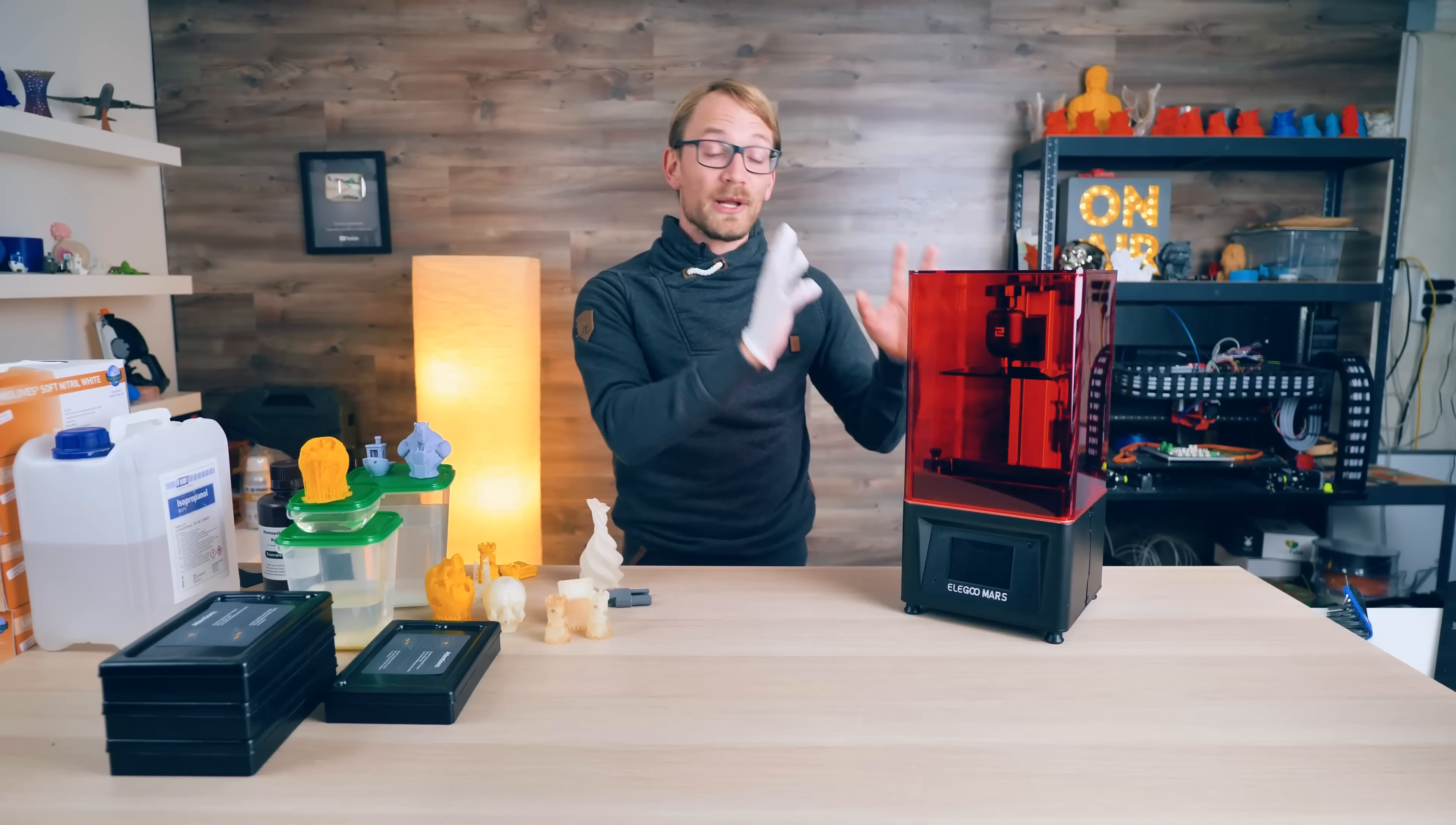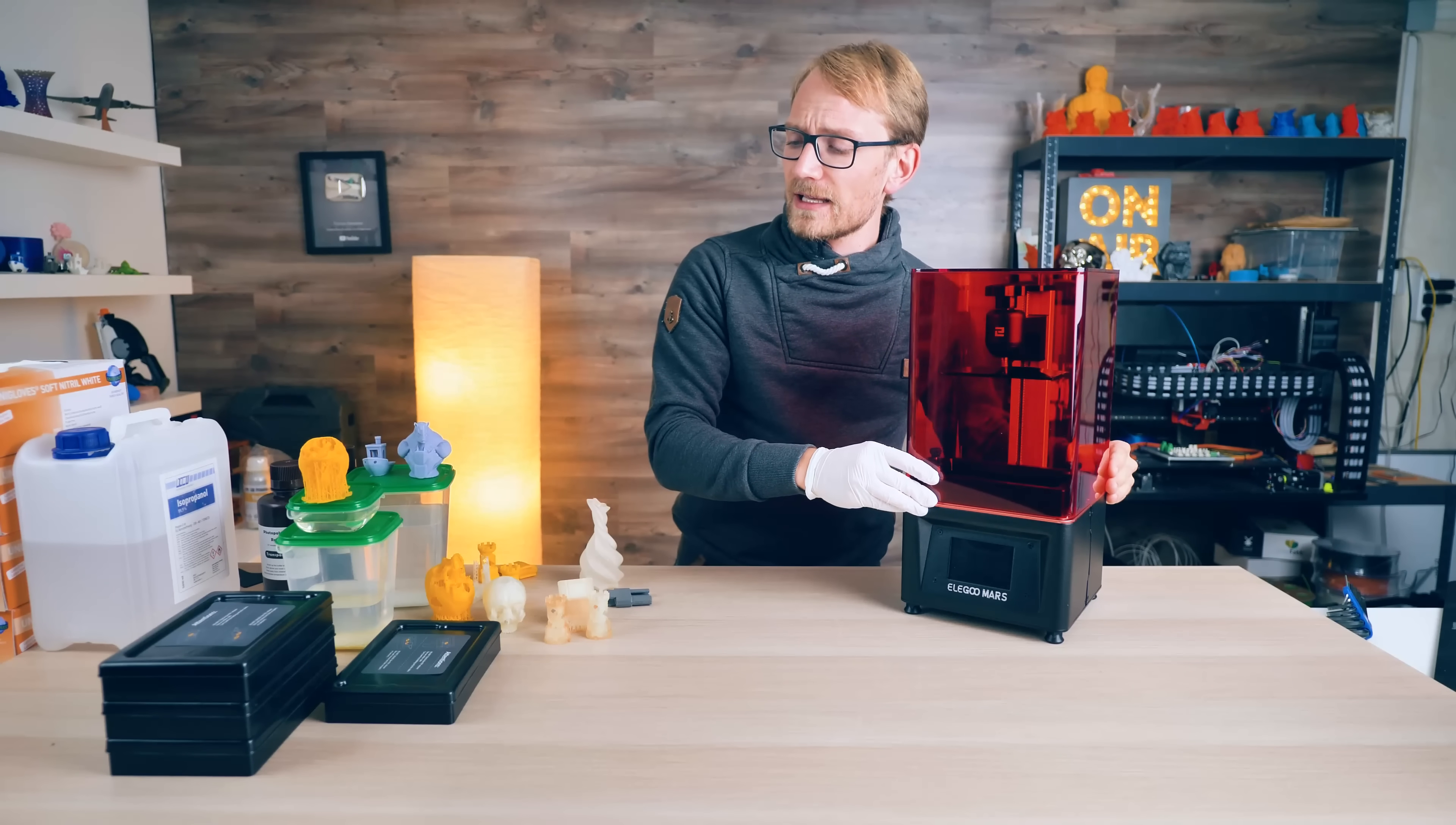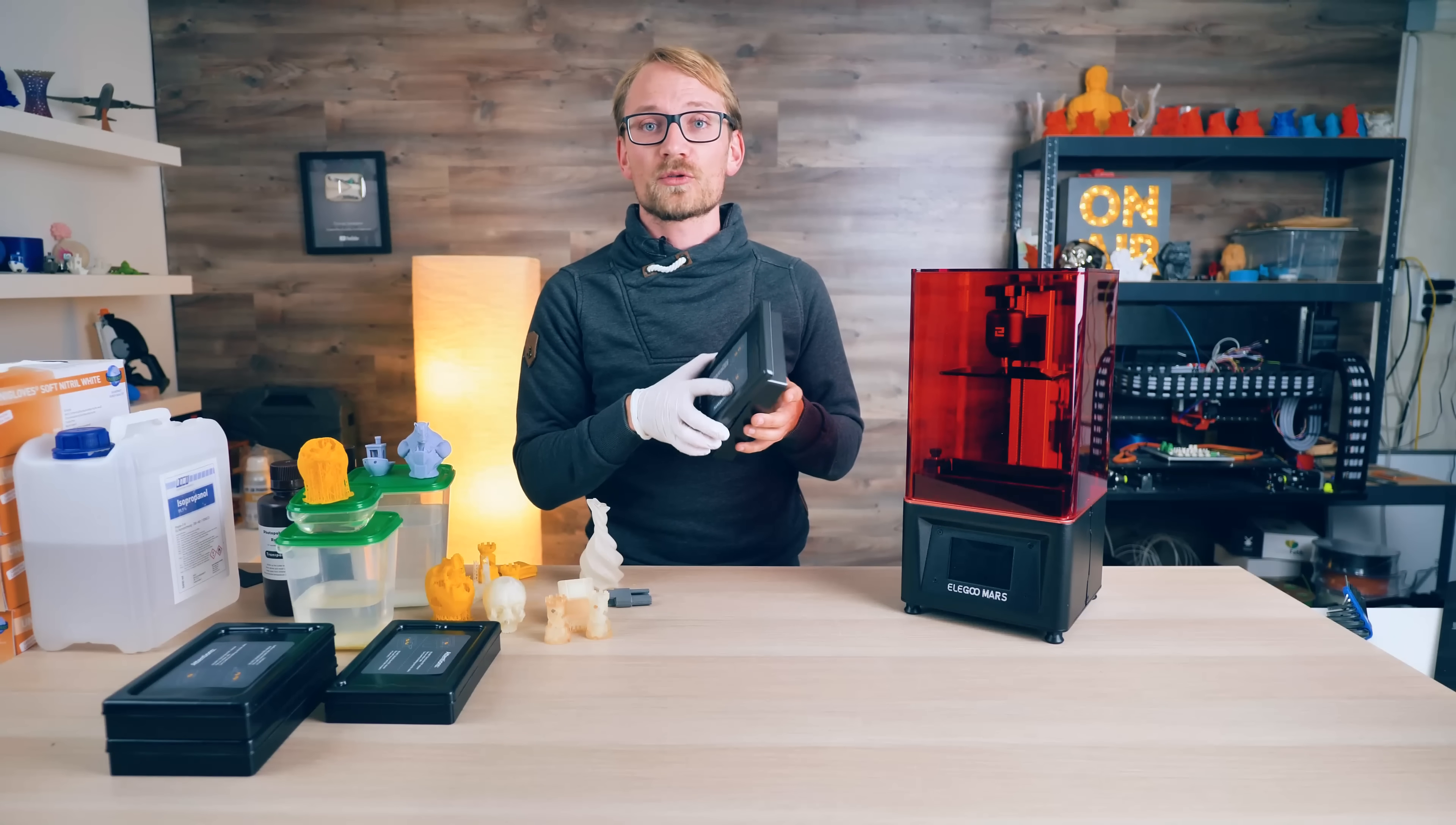Okay, back to the printer. Build quality is very good, there's no z-wobble, the parts feel solid, and even the resin container, the one that's in the printer right now, is a solid, heavy, milled chunk of aluminum. Elegoo also offer a four-pack of plastic vats for a very reasonable price, and I think these are basically a must-have if you're printing with more than one type of color or resin.